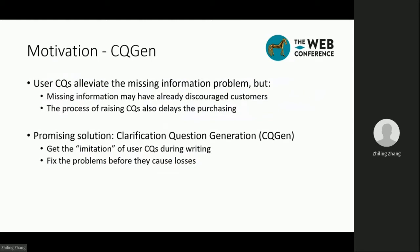But relying on such user feedback may have some drawbacks. Missing information may have already discouraged users, and the process of reading clarification questions also delays processing. The recently proposed clarification question generation can be a promising solution for these problems, as it uses generation algorithms to help authors get an imitation of user clarification questions during writing, so that they can fix the problems before they cause losses.